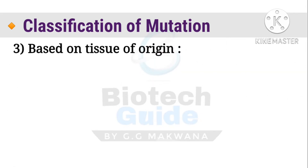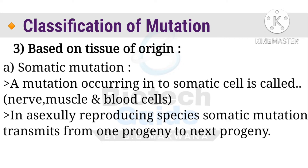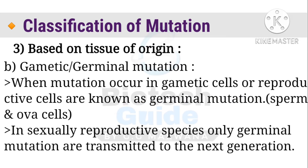The third classification is based on tissue of origin, with two types: somatic mutation and gametic mutation. Mutations occurring in somatic cells — including nerve cells, muscle cells, and blood cells — are defined as somatic mutations. When mutation occurs in gametic cells, it is defined as gametic mutation. Gametic cells include sperm cells and ova; in sexually reproductive species, germinal mutations are transmitted to the next generation.